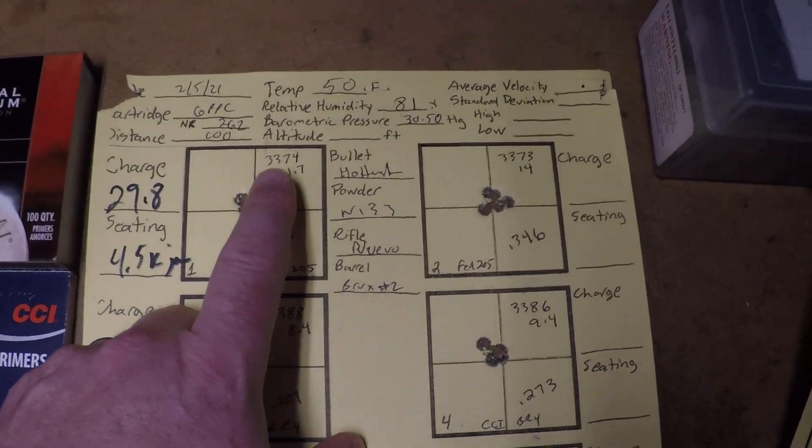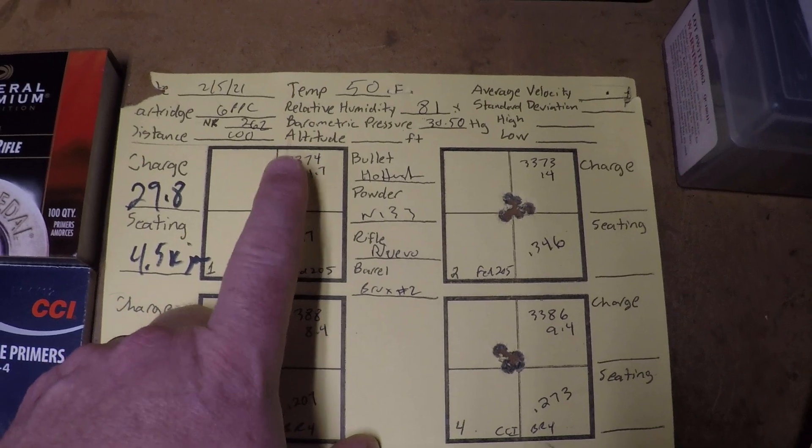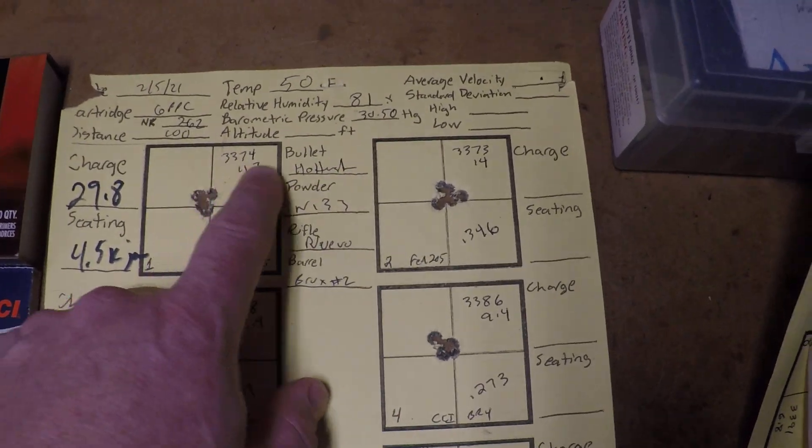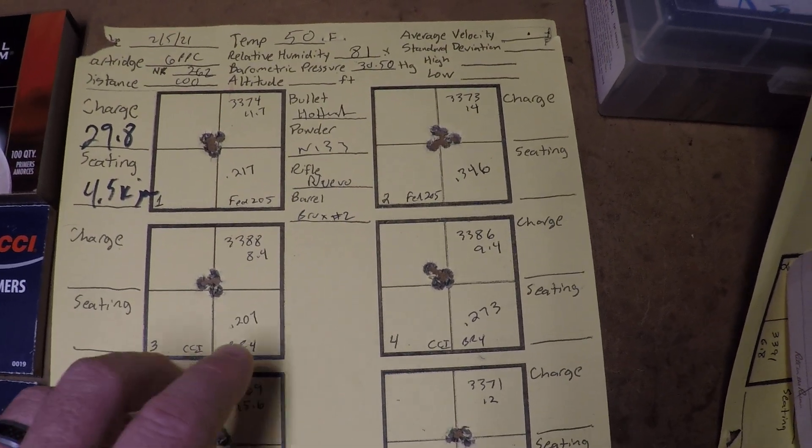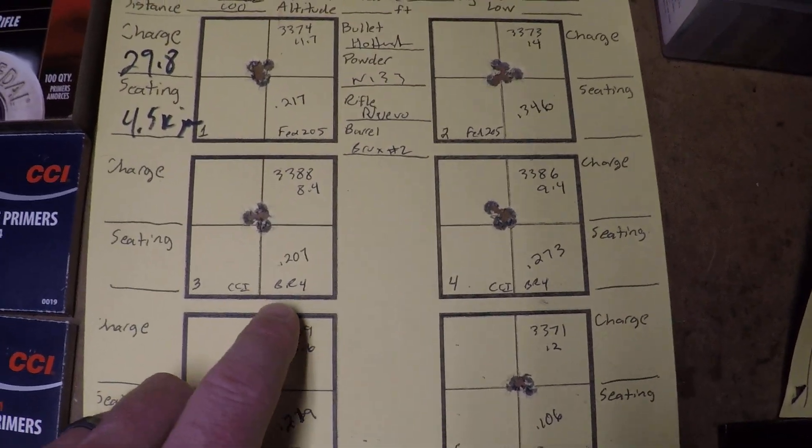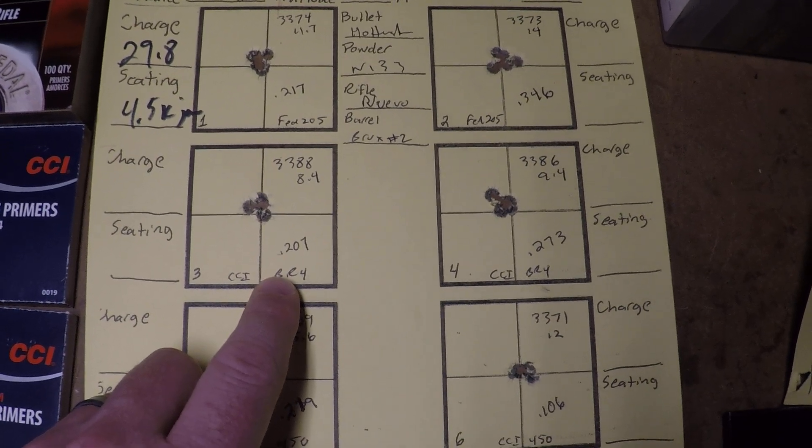The velocities, however, again, from the 205, these two were about the same. So, 205, we have 3374-ish type velocity.